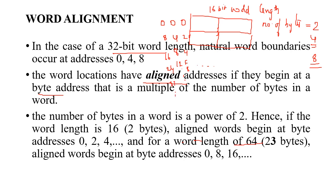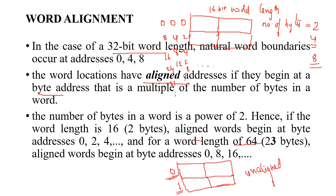This is called word alignment. If a word begins at an arbitrary value — for example in a 16-bit word length if the first word starts at address 0 but the next word address is 1 instead of 2 — this kind of alignment is called unaligned, meaning it is not word aligned.